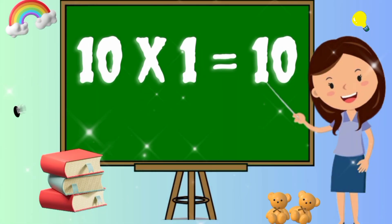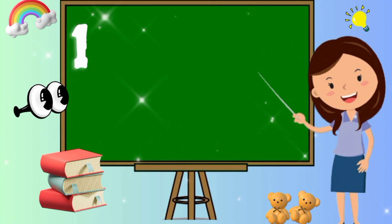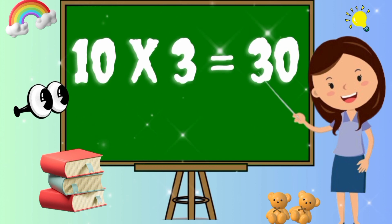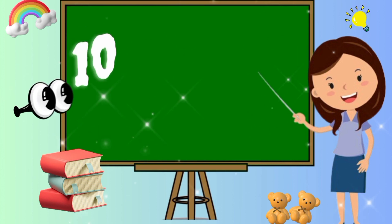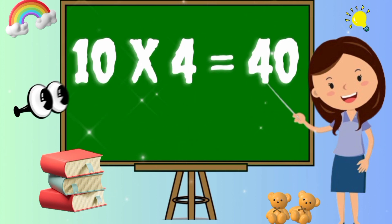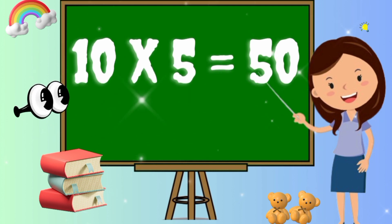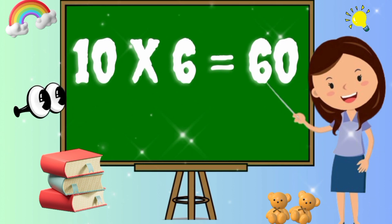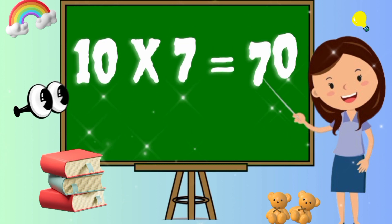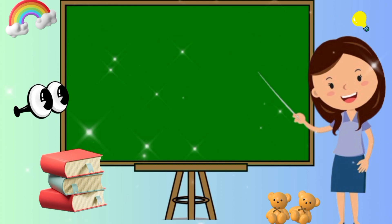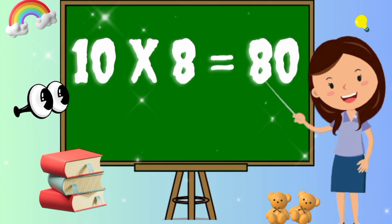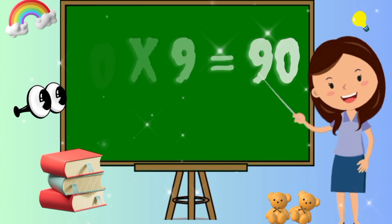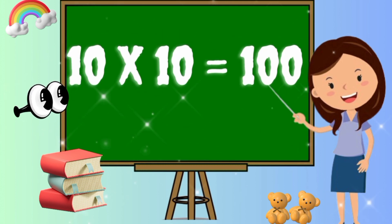Table of ten. Ten ones are ten. Ten twos are twenty. Ten threes are thirty. Ten fours are forty. Ten fives are fifty. Ten sixes are sixty. Ten sevens are seventy. 10 eights are 80. 10 nines are 90. 10 tens are 100.